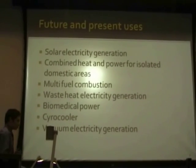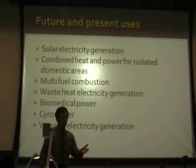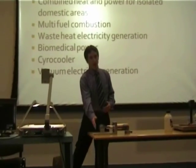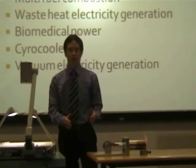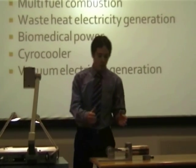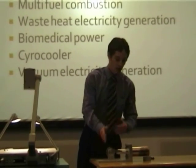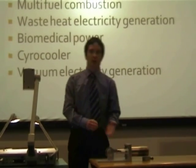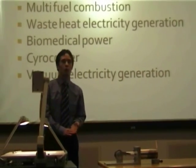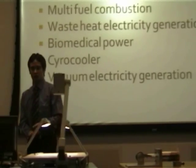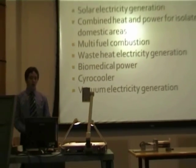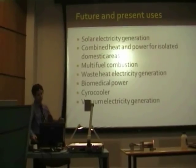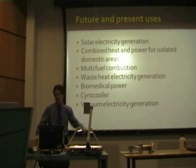A cryocooler is another interesting technology. The Stirling engine operates by introducing heat and getting out mechanical work. A cryocooler is a Stirling engine in reverse — putting in mechanical work and getting extremely low temperatures at the low temperature region. At the moment, technology can achieve temperatures below minus 150 degrees Celsius. NASA is also looking into vacuum electricity generation, bringing the Stirling engine outside our planet's atmosphere.